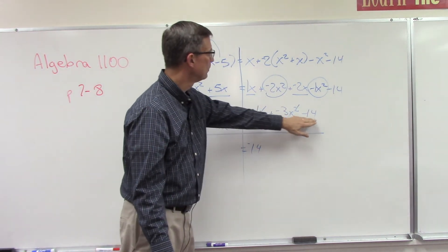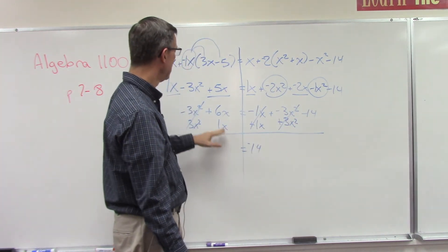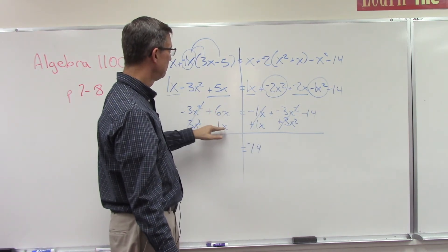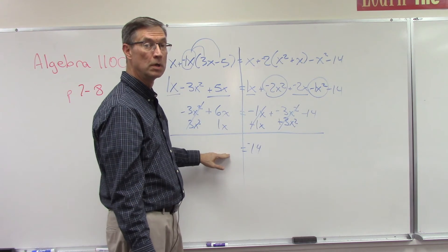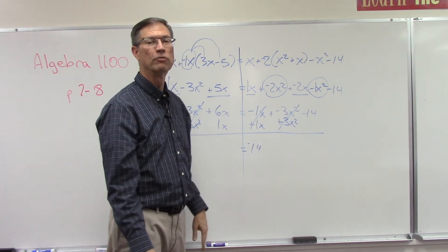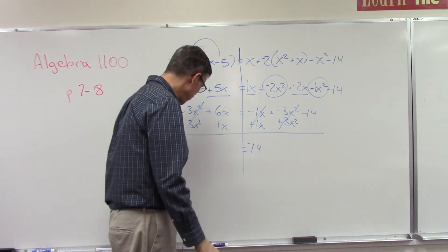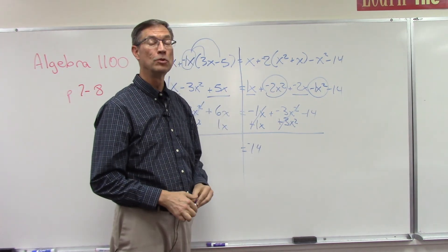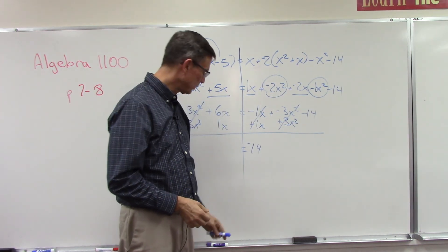Okay, so these cancelled, we keep the negative 14 on this side, and now you can see that over here 6x plus 1x gives you... I'm not going to finish that one. All right, you can take it from there. Hopefully by getting to this point we found some of your confusion and help clear that up for you.